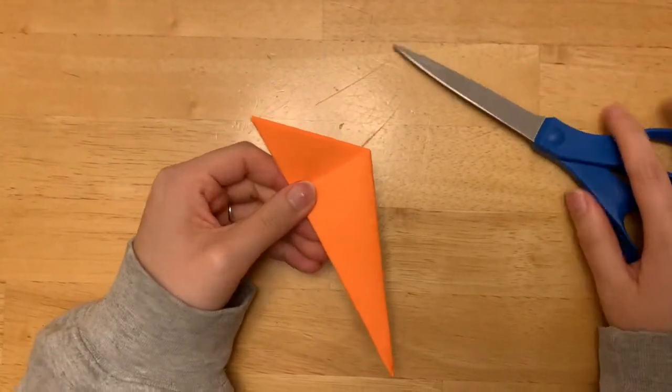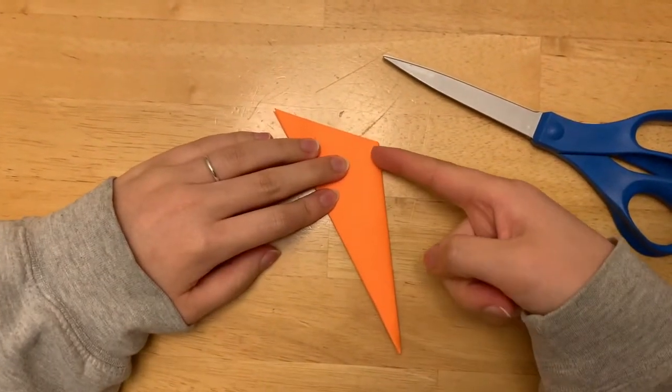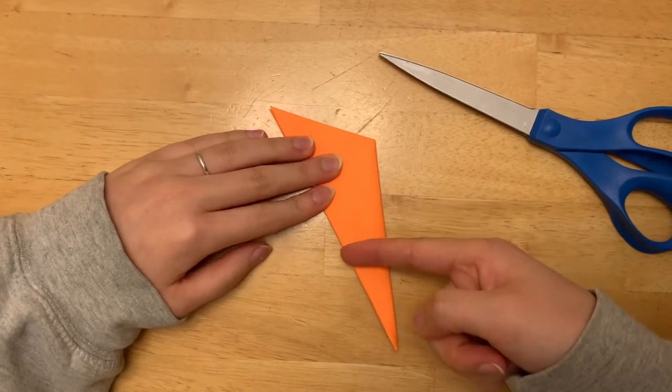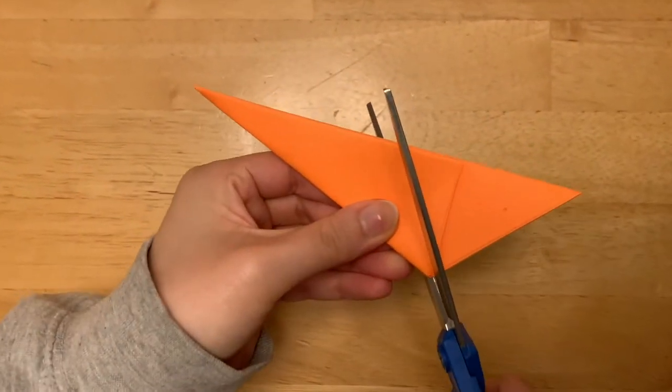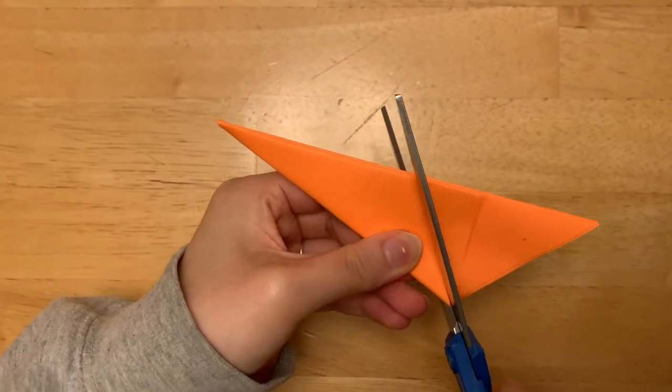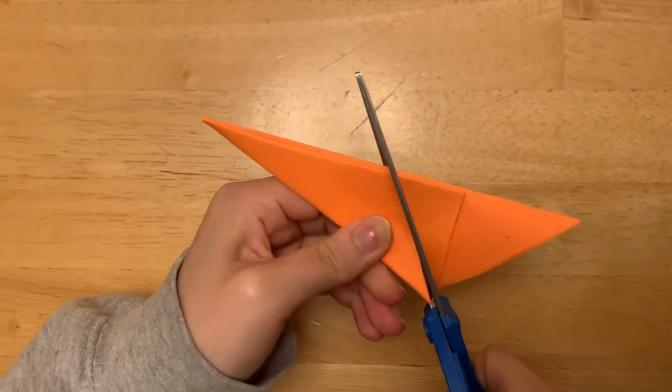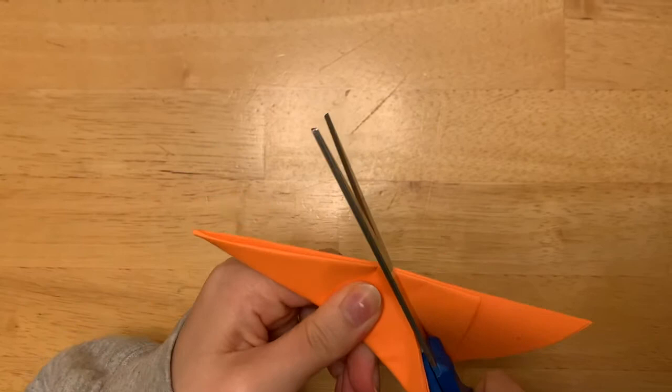Now, you're gonna take your scissors and we are going to cut from this corner to this edge. Let me show you. So start by cutting this corner over to this edge.